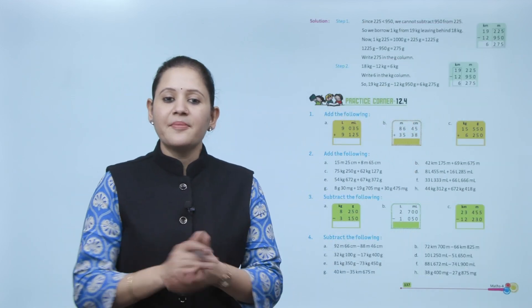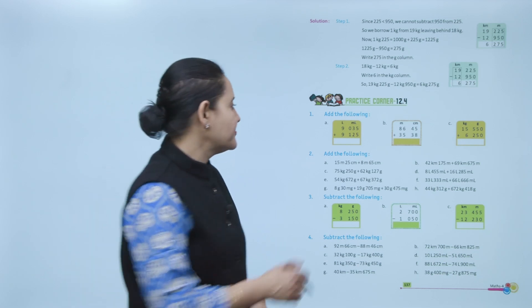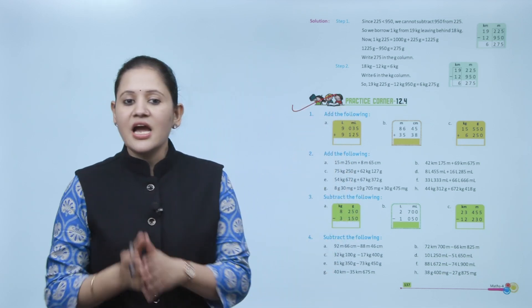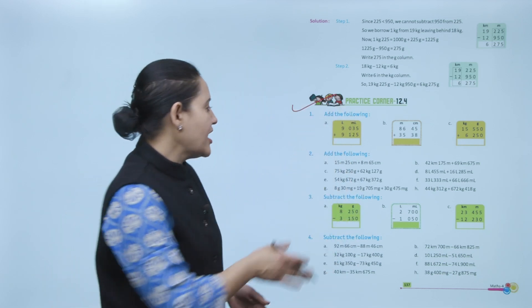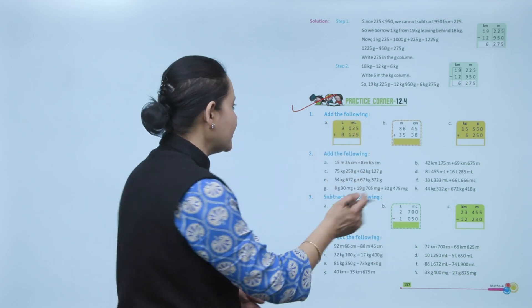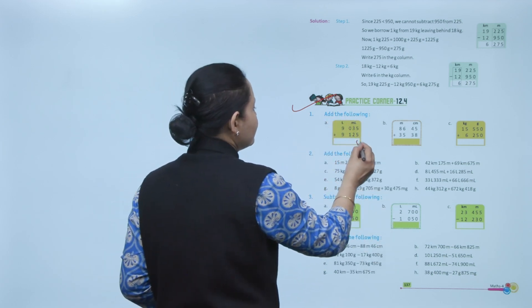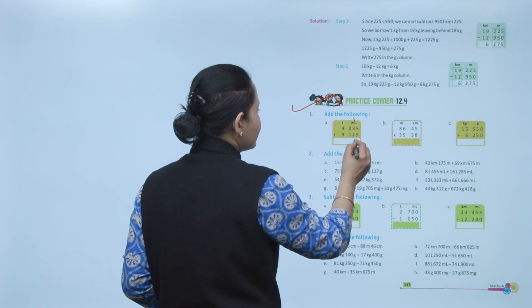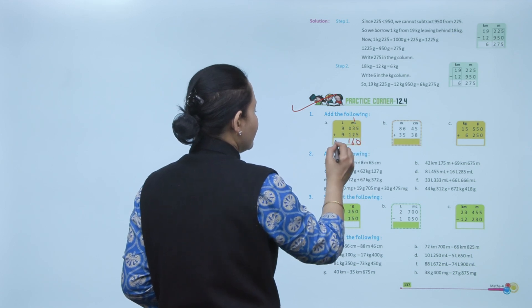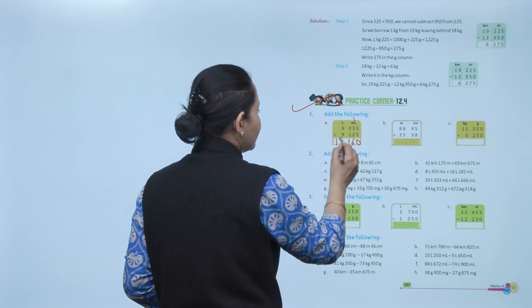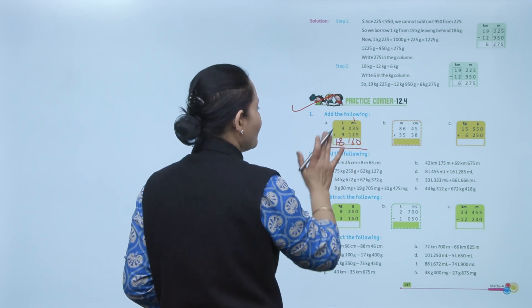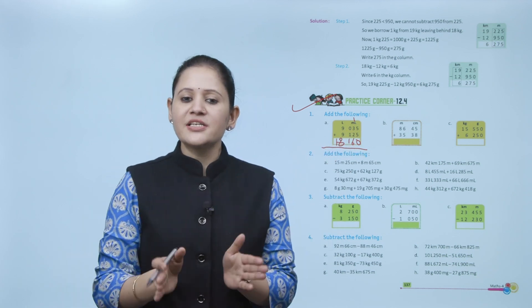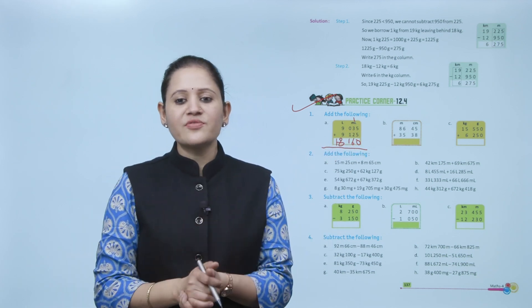Next is Practice Corner 12.4. Add the following: start from milliliters — 5 + 5 = 10, write 0 and carry 1; then 3 + 5 + 1 = 9; then 9 + 9 = 18. The answer is 18 liters 160 milliliters. Practice all the questions of this exercise.